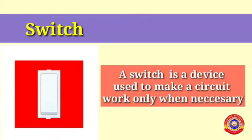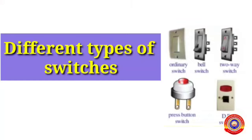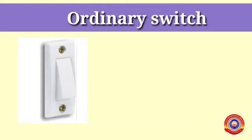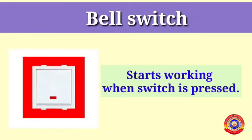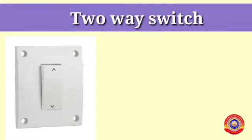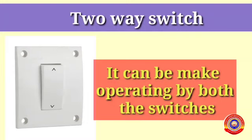Then what is the purpose of using a switch? A switch is a device used to make a circuit work only when necessary. Let's see the different types of switches. Ordinary switch: it is used generally to make an electrical instrument work or stop working. Bell switch: a bell switch starts working when the switch is pressed — you might have seen a calling bell produce sound when the switch is pressed.